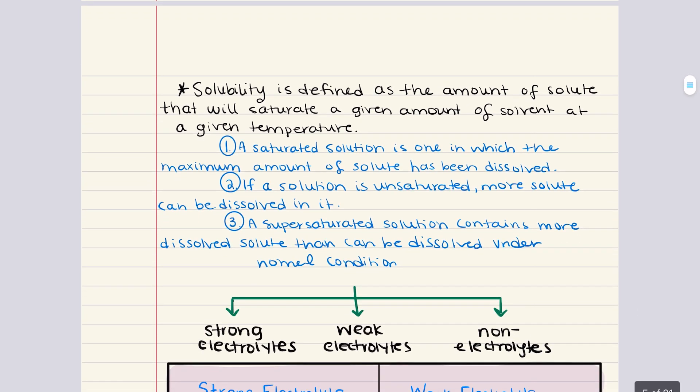The first kind of solution we want to discuss is an unsaturated solution. An unsaturated solution is one in which the solute concentration is less than its maximum solubility at a given temperature and pressure. What this means is that more solute can be dissolved in the solvent without reaching the limit of solubility. So, the solution has not yet reached its capacity to hold the solute.